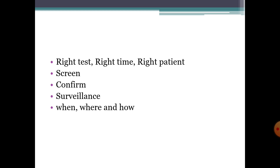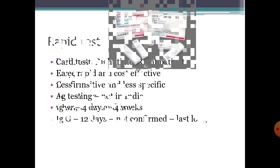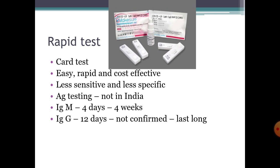The key point is to have the right test at the right time for the right patient. Tests are done to screen for early detection, to confirm test results, and for surveillance — close observation of a population. Make the right decision on when, where, and how tests should be used. Rapid tests or CART tests are normally used; they are easy, rapid, and cost effective, but the disadvantages are that they are less sensitive and less specific.